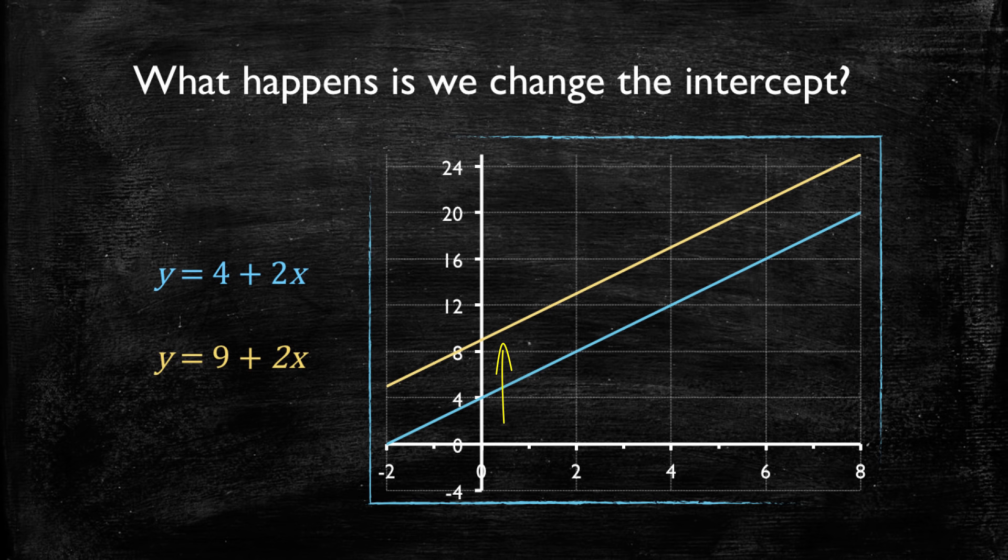We could also have a negative intercept, which would imply that the line is intersecting the vertical axis below the horizontal axis at a negative number. If x were zero here, y is minus two.